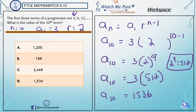So a sub 10, meaning the 10th position in the list of numbers. If I were to continue from 3, 6, 12 and keep multiplying by 2 repeatedly until the 10th position, I'm going to get 1536.